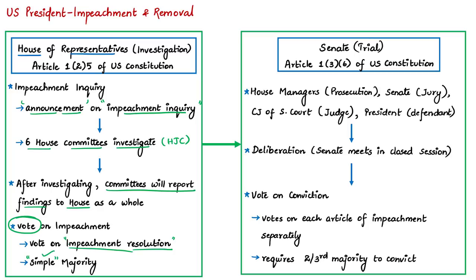Once the impeachment resolution is passed in the House of Representatives, the matter of impeachment is referred to the Senate. The House of Representatives handles the investigation, while the Senate handles the trial for impeachment. The House of Representatives has a strength of 435 members, so simple majority is 218. The House had a majority of members from the Democratic Party, which is one main reason why the vote on impeachment passed quite easily.